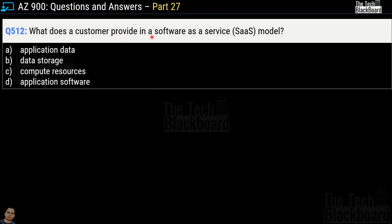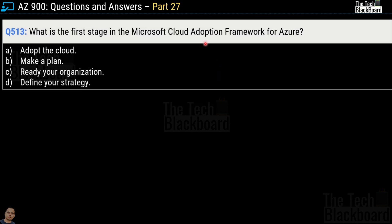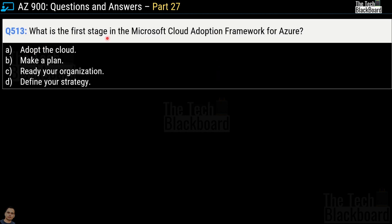Question 512: What does a customer provide in a software as a service model? Options are application data, data storage, compute resources, or application software. The correct answer is option A, application data. Question 513: What is the first stage in the Microsoft Cloud Adoption Framework for Azure? Options are adopt the cloud, make a plan, ready your organization, or define your strategy. The correct answer is option D, define your strategy.